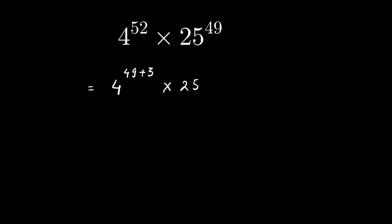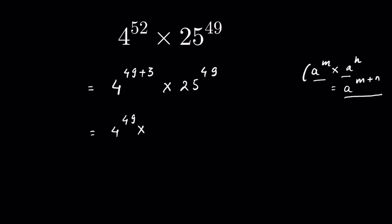We have the expression: if a to the power m times a to the power n, then we can write it as a to the power m plus n. So 4 to the power 49 plus 3 can be written as 4 to the power 49 times 4 to the power 3.